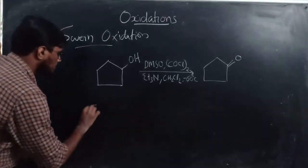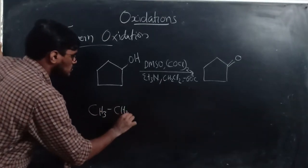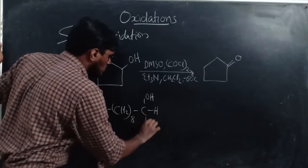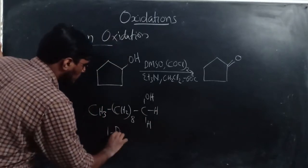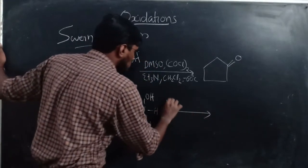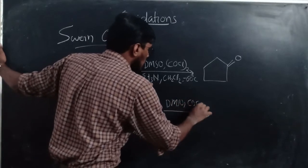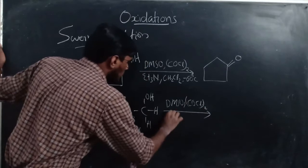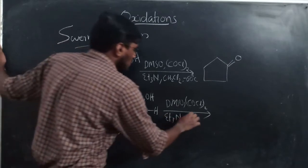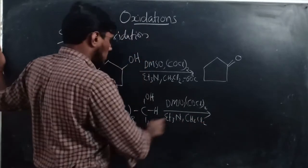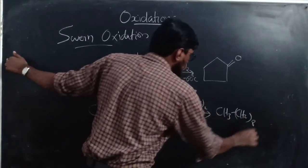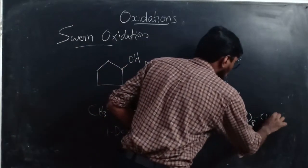Another example: 1-decanol — CH₃(CH₂)₈CH₂OH — reacts with the same reagents: DMSO, oxalyl chloride, triethylamine, and dichloromethane. The product is decanal — CH₃(CH₂)₈CHO — the corresponding aldehyde.